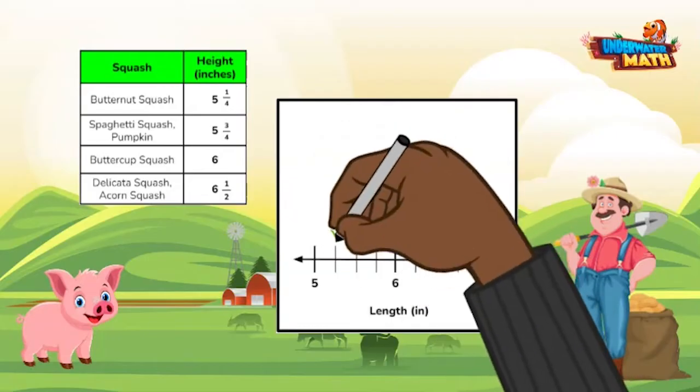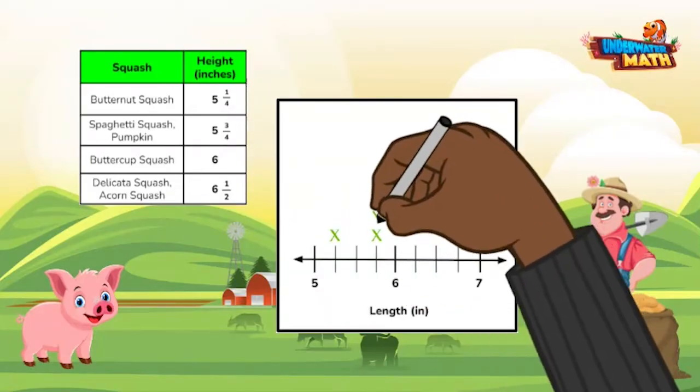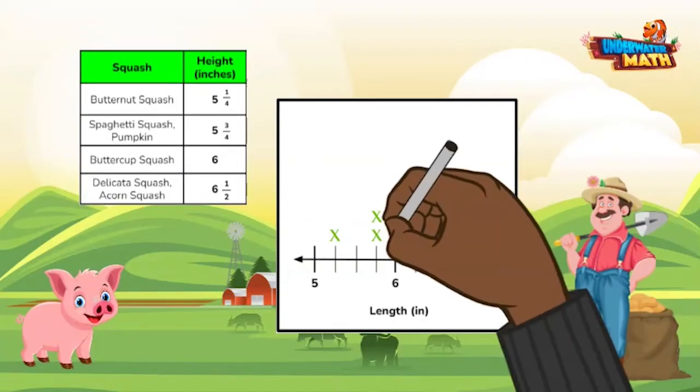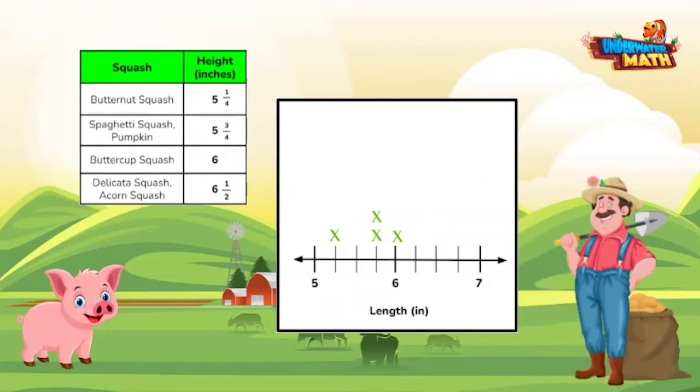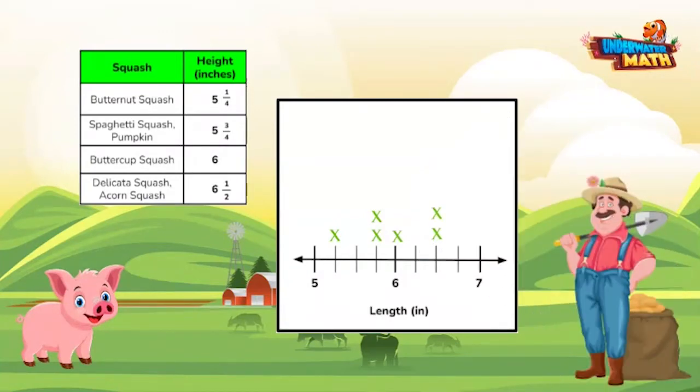The butternut squash's length was five and one fourth inches. Both the spaghetti squash and the pumpkin measured five and three fourths inches. The buttercup squash measured six inches, and both the delicata squash and the acorn squash measured six and one half inches.